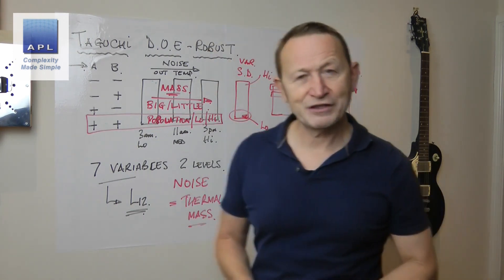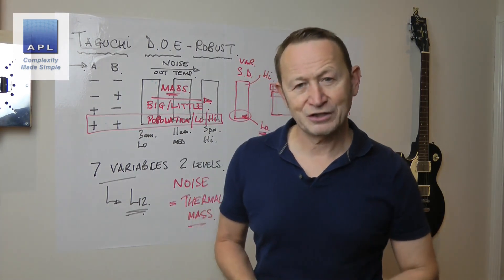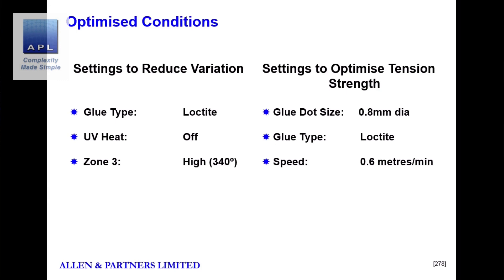Now we've carried out the analysis and you can see the results that we got here. So in order to control the standard deviation, you can see the analysis. We have three of the variables that will drive the standard deviation to be better. The first one is the glue type. Now the better supplier is Loctite. Now they happen to be cheaper by the way. So this solution is going to save us money, not cost us money. So glue type is a better glue. Switching the ultraviolet light off actually makes the bond more consistent. And that's a surprise.